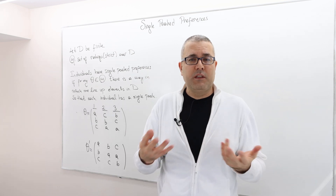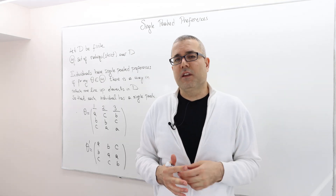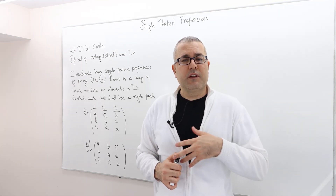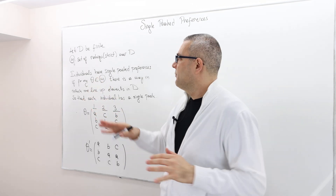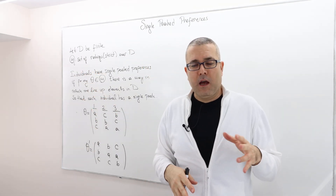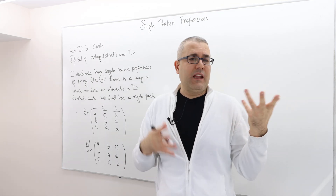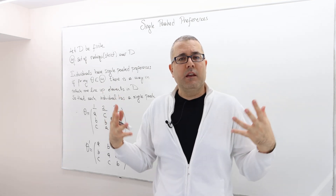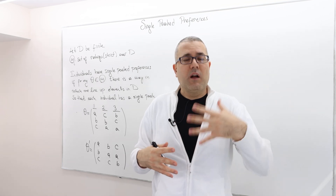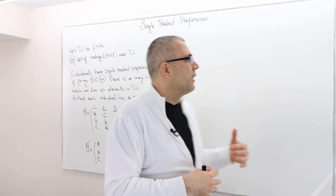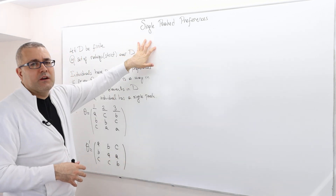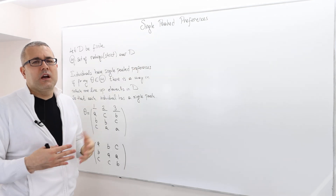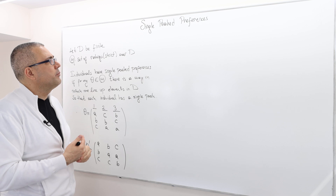When I say 'nice,' dictatorial social choice functions are not nice in that sense. However, it's a well-known result that this impossibility theorem does not survive if we restrict the type space or the preferences — meaning the agents' preferences can't be anything; they are somehow restricted. And so in this restricted domain of preferences or types, possibility actually exists. This is one of the restricted domain assumptions, and it's highly famous: single-peaked preferences.